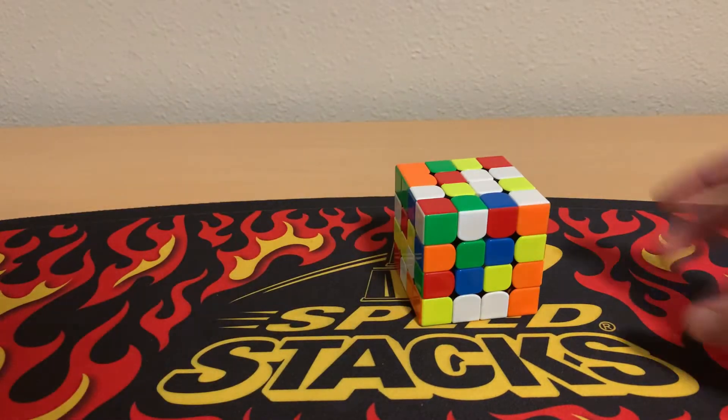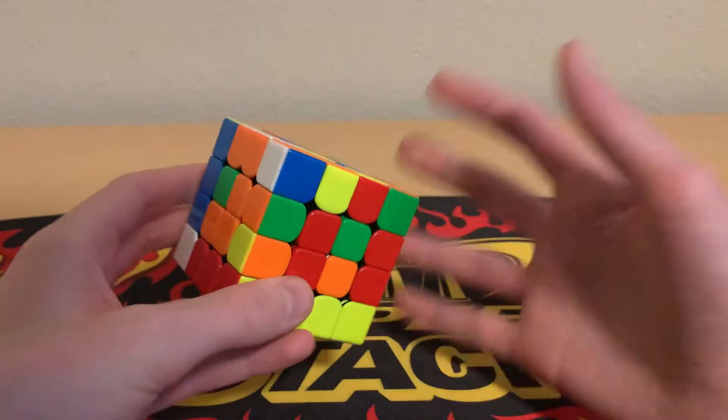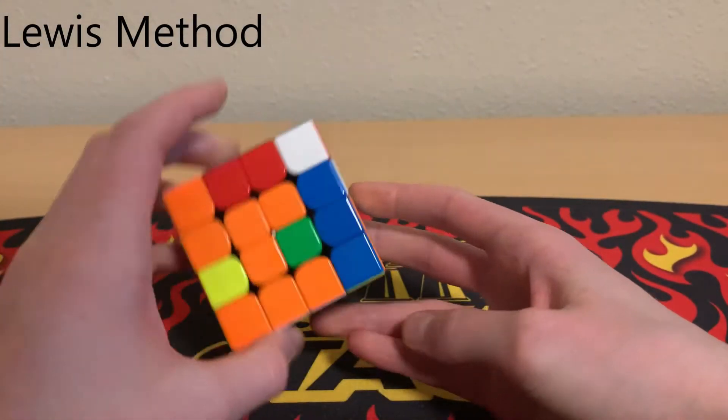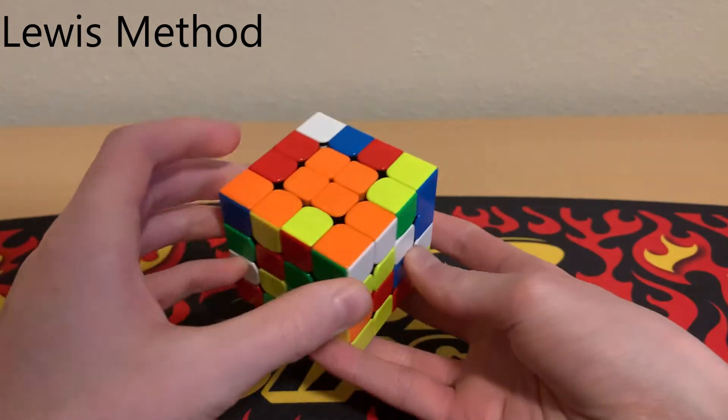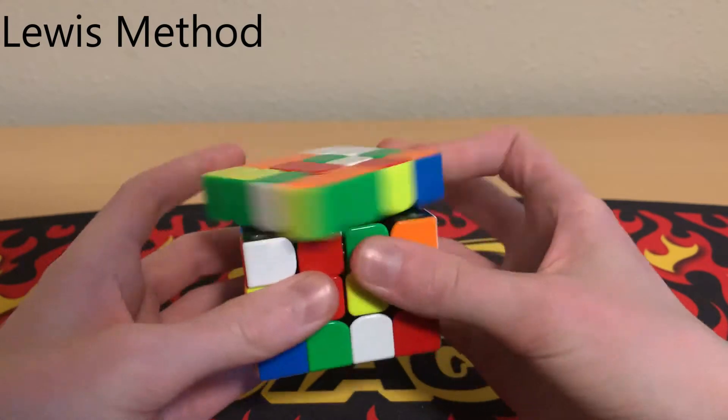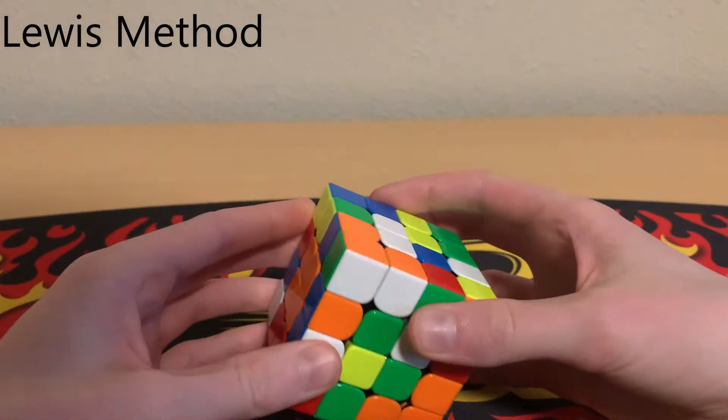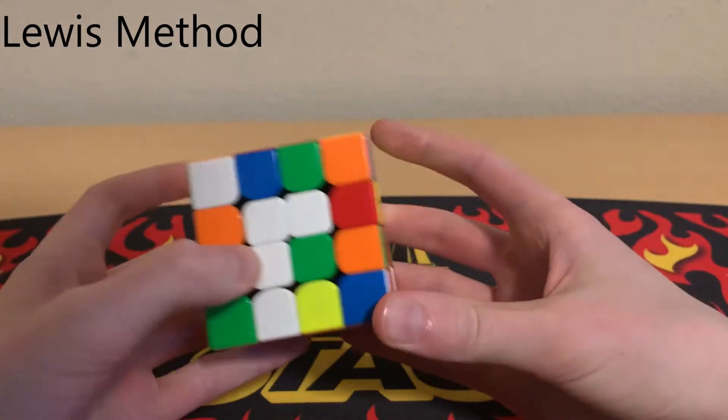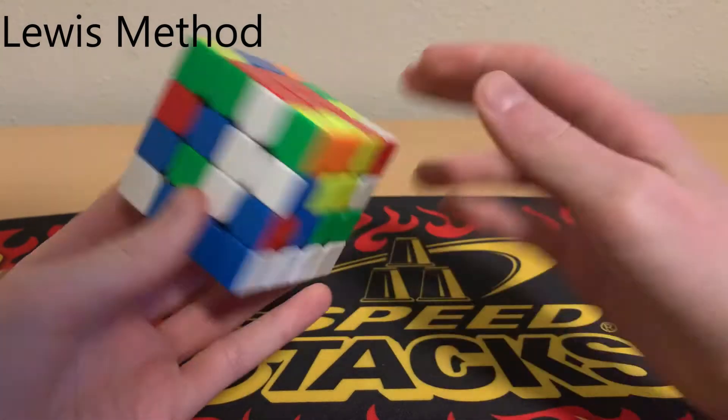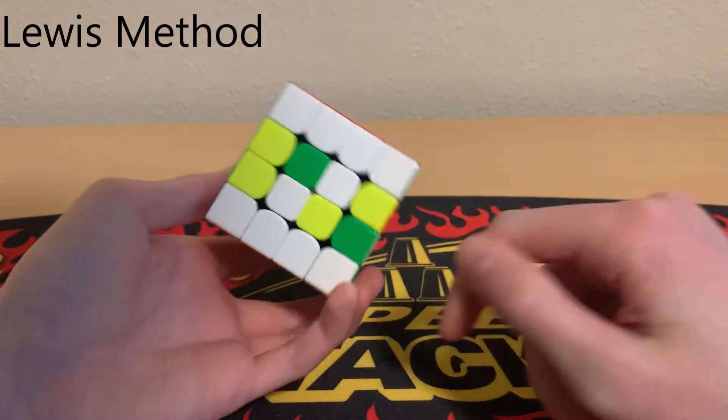Okay, so let's talk about a slightly different approach to doing Roux on 4x4. This approach is called the Lewis Method, invented by Lewis, probably. We do the same thing as the other one—two opposite centers—and then instead of building one block, we actually start building both right away. Just build both blocks.